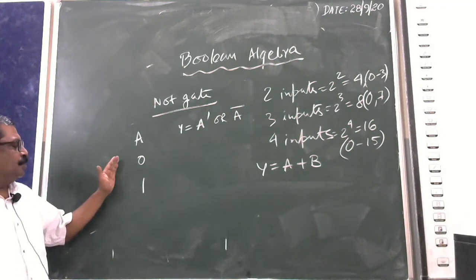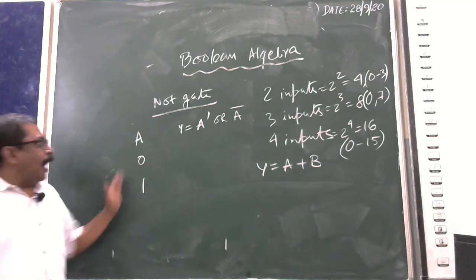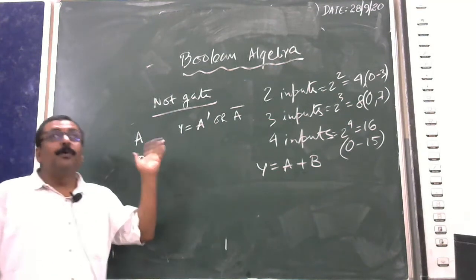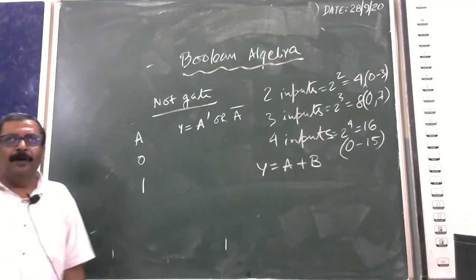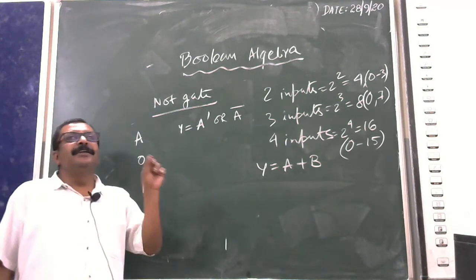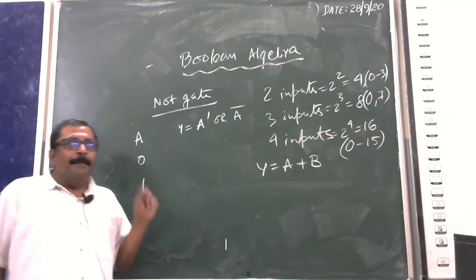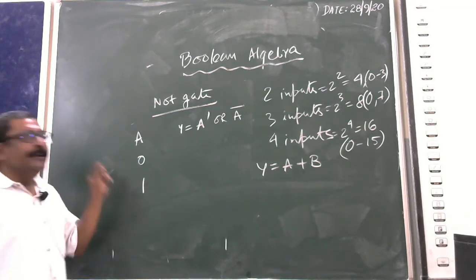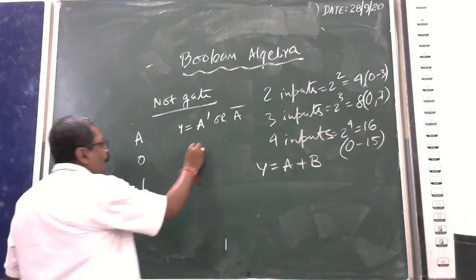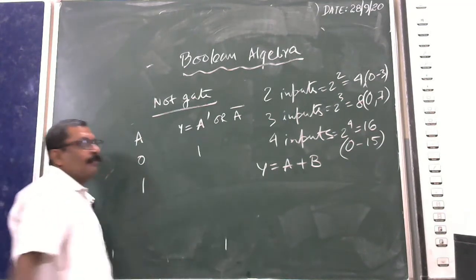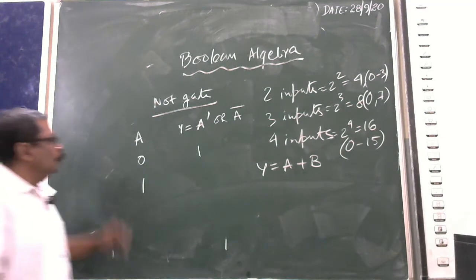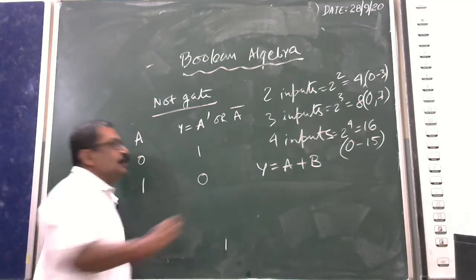The output will be the complement. Complement means just the reverse of the number — if the input is 0, the output will be 1; and if the input is 1, the output will be 0.